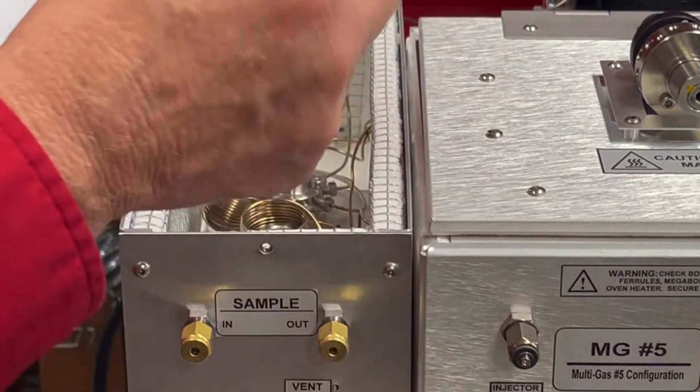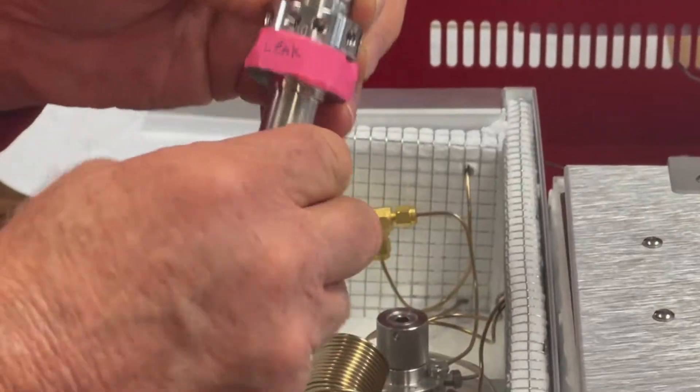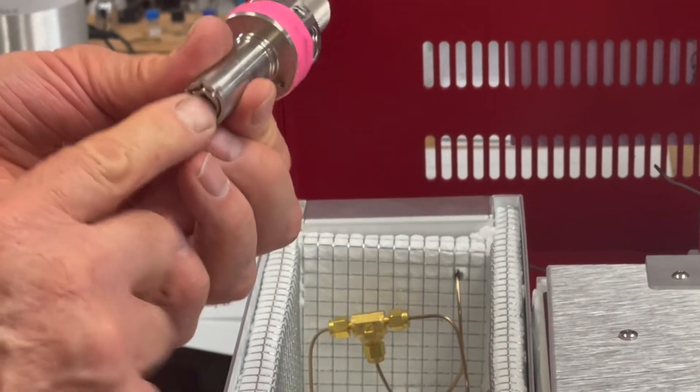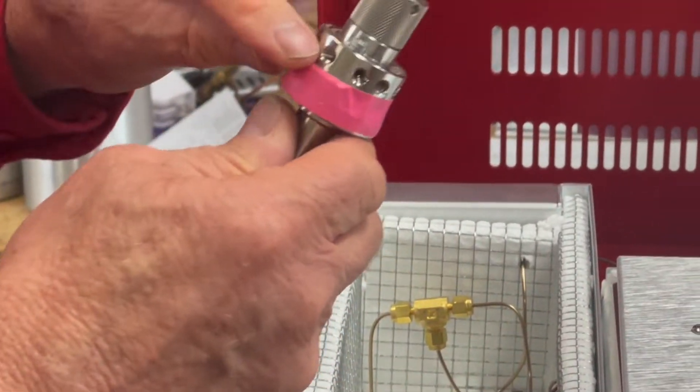But sometimes the valve head comes with a shaft like this, and there's a drive shaft in here, and sometimes the problem with the valve has to do with this drive shaft. So, if that's the case, then really the whole valve head, not just the top of the valve head, needs to be removed.